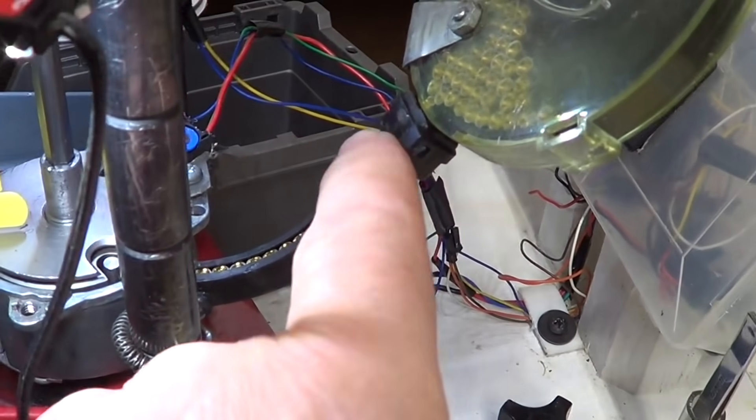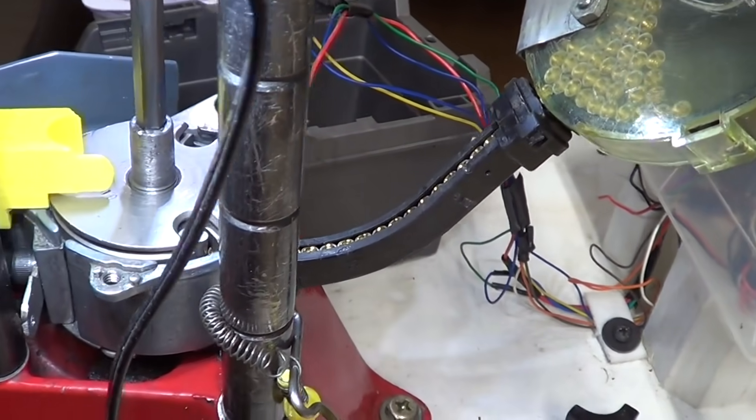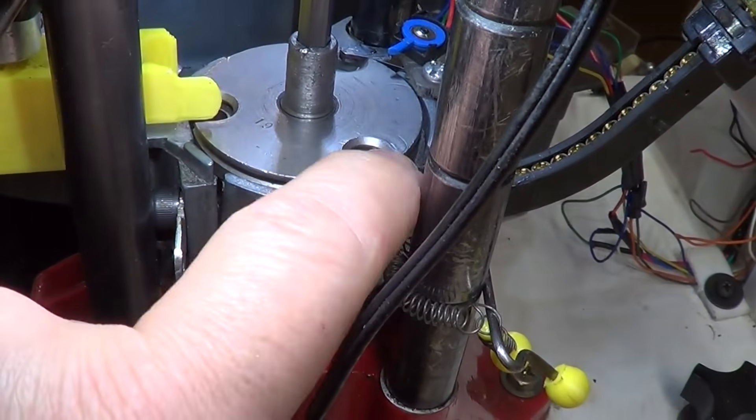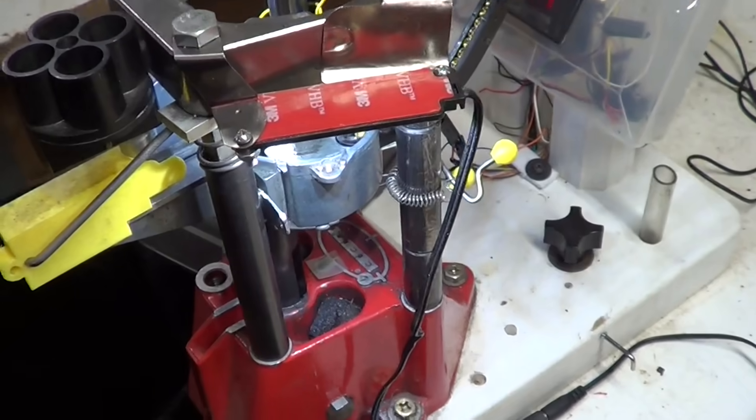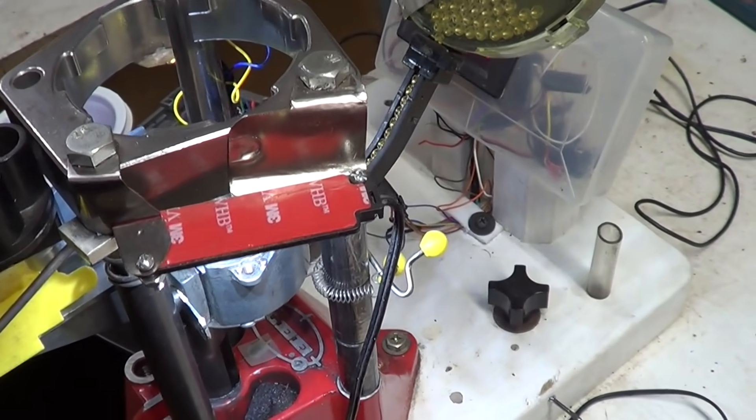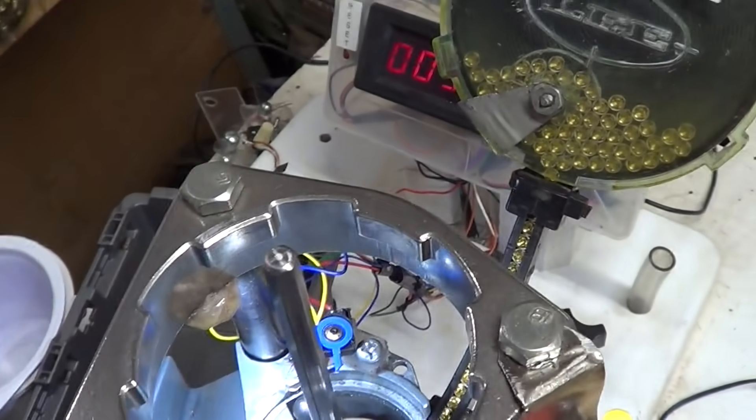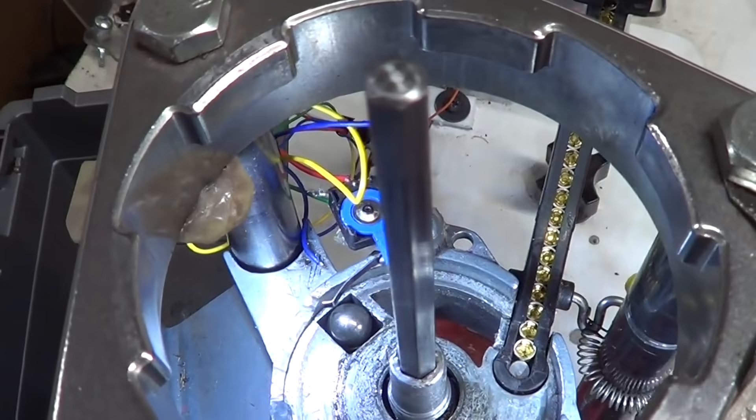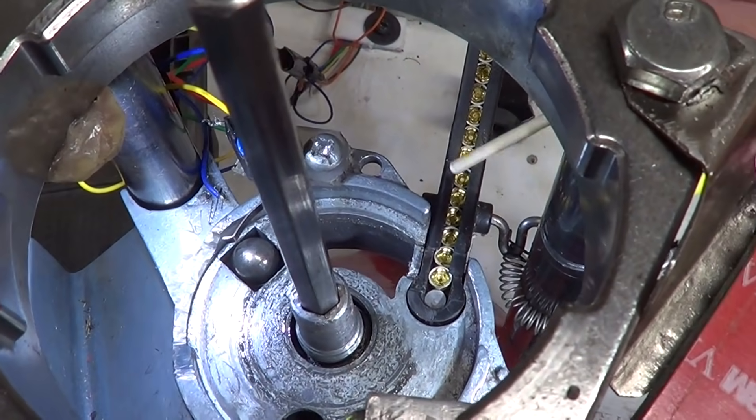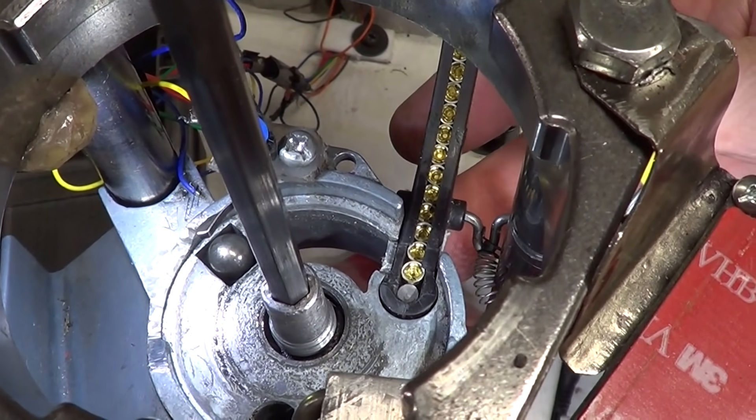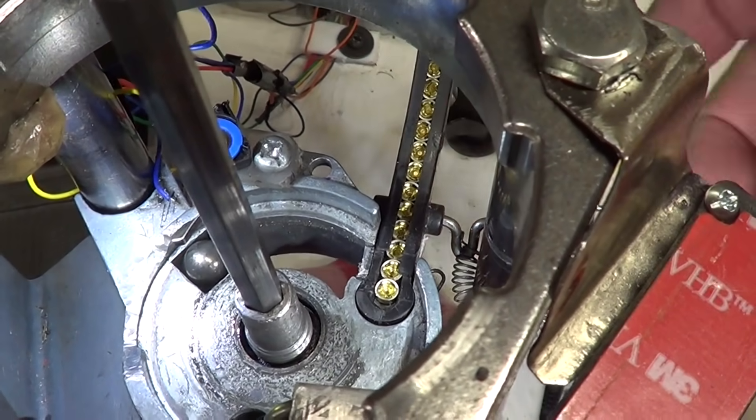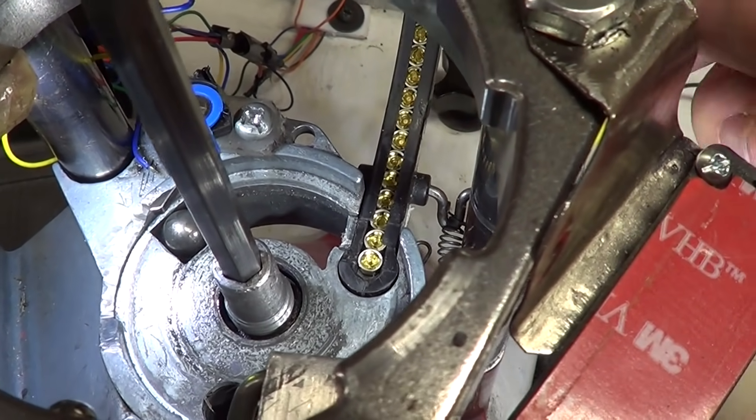The primers come sliding down here and into this system here where they get loaded into the casing. So I've taken it apart here so you can see the inside workings. Here's where the primers come down. As a shell casing comes around, it trips a lever, letting the primers go down into the next station.